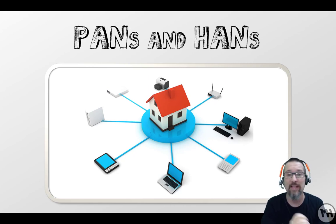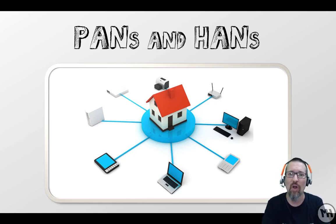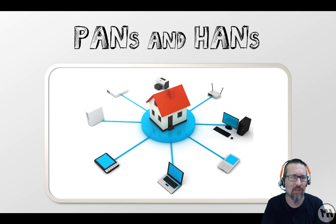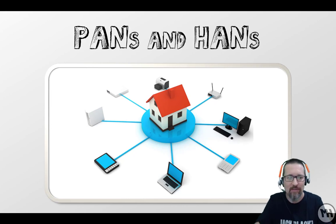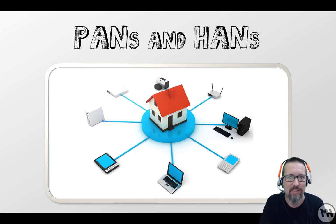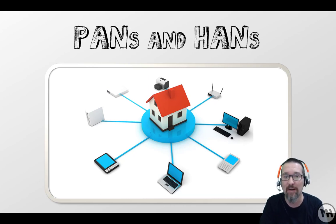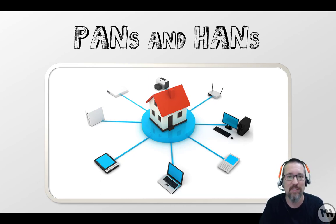Make sure you learn the advantages and disadvantages of each. Have a look at your own house — what does your Home Area Network look like? What does your personal area network look like? If you go to a coffee shop and want to get online, how do you do that? Think about that the next time you see people working in a coffee shop, or have a look around your house and see what you have.